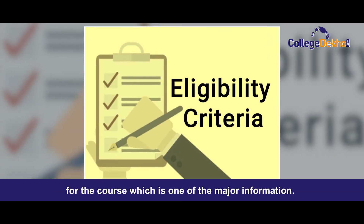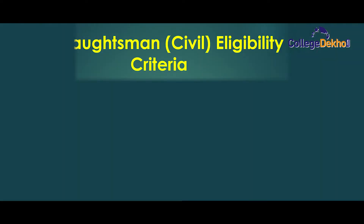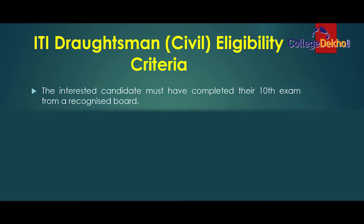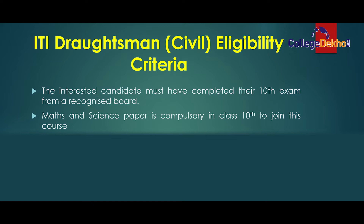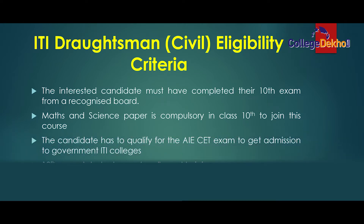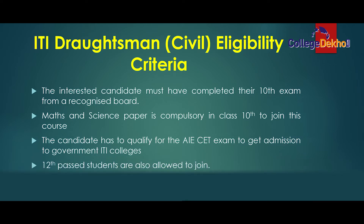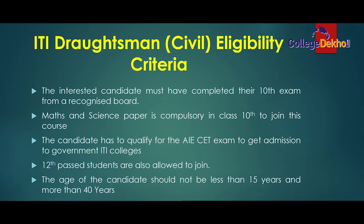ITI Draftsman Civil eligibility criteria: the candidate must have completed their 10th exam from a recognized board. Math and Science are compulsory in class 10th to join this course. The candidate has to qualify for the AICET exam to get admission to government ITI colleges. 12th passed students are also allowed to join. The age of the candidate should not be less than 15 years and not more than 40 years.